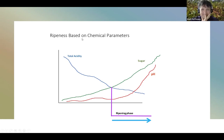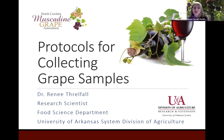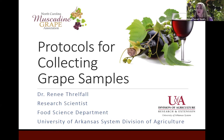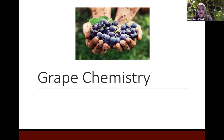Thank you, Nadia. Good morning, North Carolina! It's good to see everyone. I'm Renee Threlfall. I am at the University of Arkansas. I'm a food scientist, so I'm coming at you from that realm. What we're going to talk about today is a little bit about grape chemistry, sampling supplies, sampling procedure, and sampling analysis. Nadia gave a good introduction and I like that she covered what happens to the chemistry, but I also think it's important to know what the chemistry means — what is soluble solids, what is pH, and what is titratable acidity.